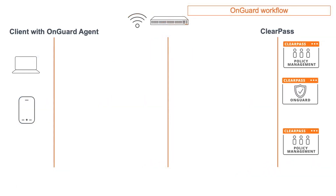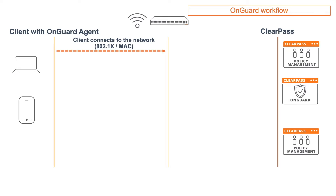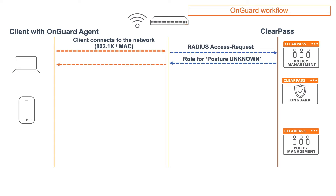So first, let's have a look at how the OnGuard workflow works. We have a normal client, which can be wired or wireless, or even VPN, and it will need to run the OnGuard agent. That can be done either by installation, we have the agentless method, and we have the dissolvable agent. But in the end, the client will run the agent. The client will connect normally to the network. At that point, ClearPass doesn't know the posture status, so it will return a role for the unknown. And that can either be a full access role.